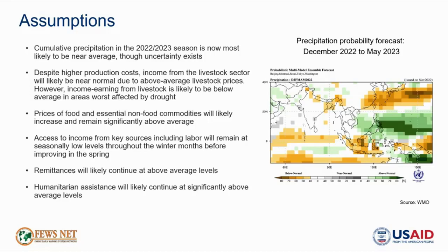Access to income from other key sources including labor will likely remain at seasonally low levels during the winter months and improve in the spring as is typical. However, overall income earning is likely to remain below average due to poor economic conditions. On the other hand, income from remittances will likely continue at above average levels and increase seasonally during the winter and lean seasons. Based on recent patterns and historical trends, humanitarian assistance will likely continue at significantly above average levels with WFP reaching at least 15 million people per month.